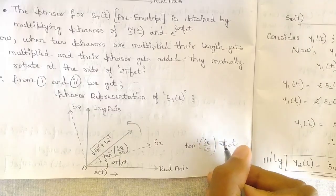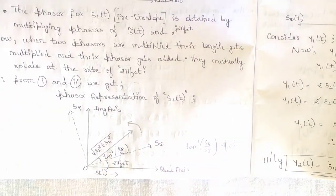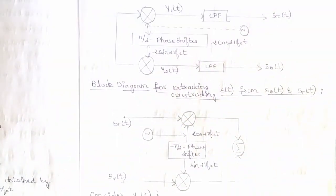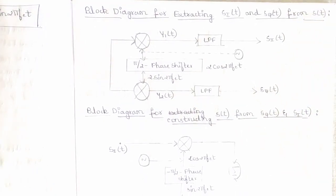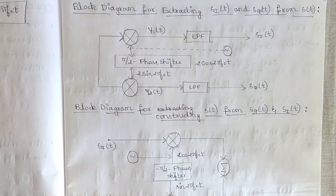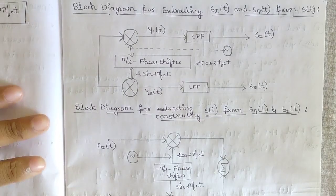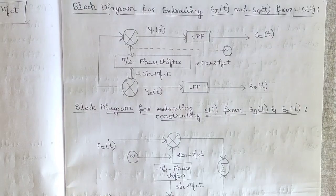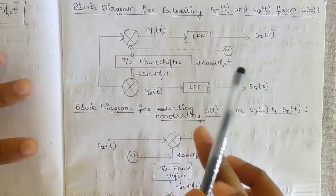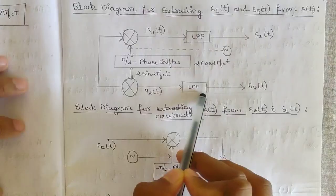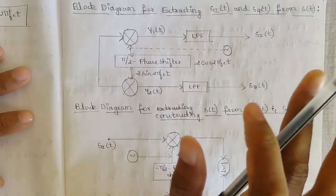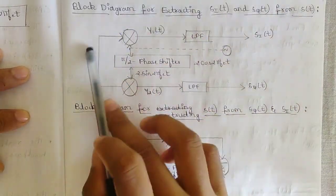That is the total phase change for the pre-envelope form. Now for the block diagram for extracting s_i(t) and s_q(t) from s(t): extraction is done using a phase shifter component, which passes through a low-pass filter, and the phase is changed such that you extract the two components s_i(t) and s_q(t).